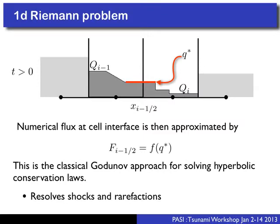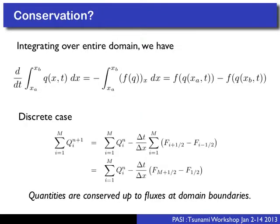We take this Q* intermediate state and evaluate our flux function at that value to get our numerical flux. This is the basis for what's called a classical Godunov-type approach to solving hyperbolic conservation laws — shock-capturing methods which resolve shocks. It does require solving a little conservation law at every single cell interface, which is sometimes viewed as expensive, but we argue it leads to superior results and can be done quite efficiently.